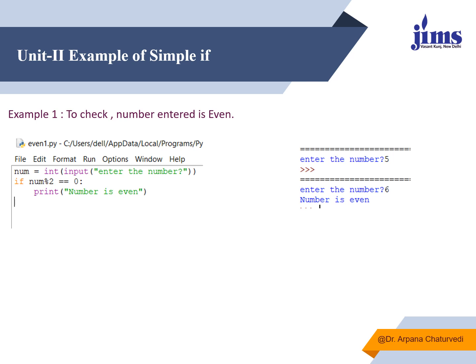Another example checks whether an entered number is even. I accepted a number from the user using `input`, converted it to integer type, and checked whether the number is divisible by 2. If the remainder is 0, it prints 'number is even'. When I entered 5, there was no output; when I entered 6, it displayed 'number is even'.